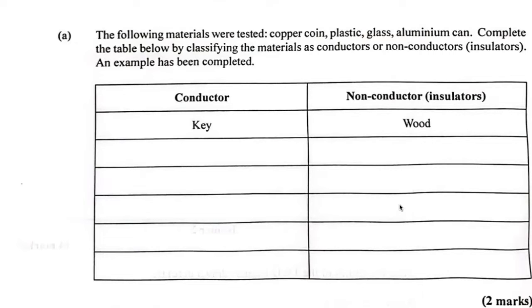Copper coin would be a conductor, very good one. And then we have plastic, which is a non-conductor. Then there's glass, which is also a non-conductor. And then our aluminum can, which would be a conductor. So just like that, two marks.